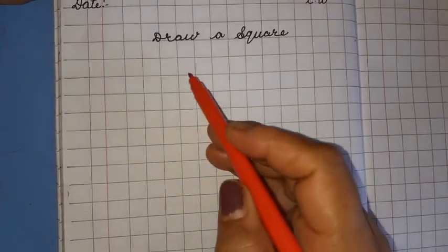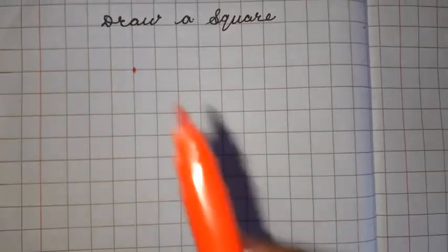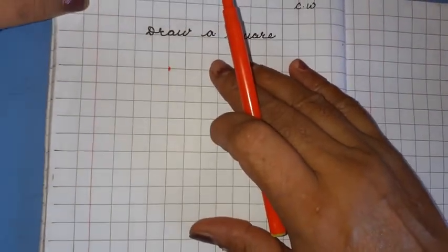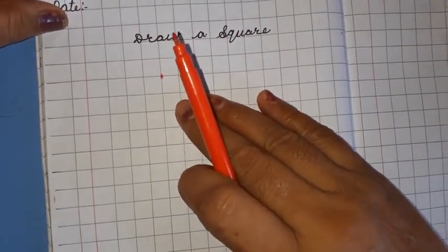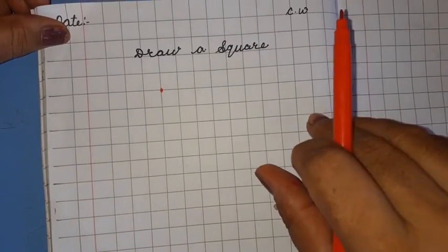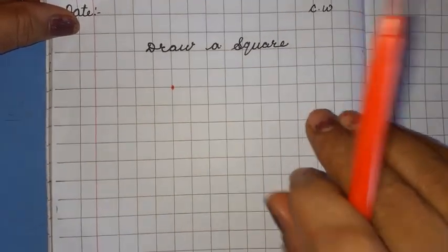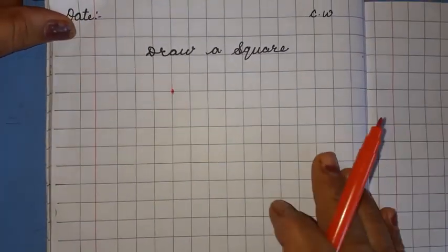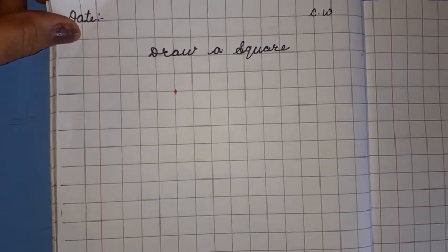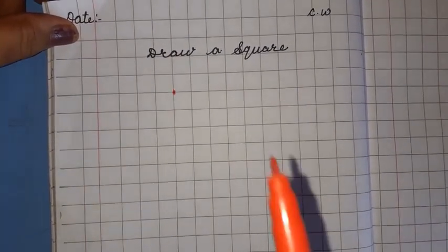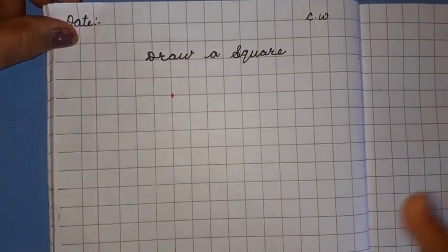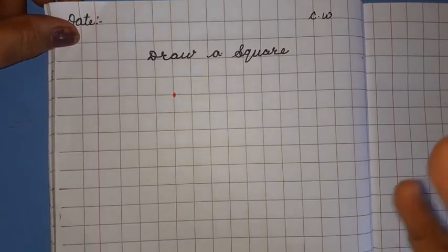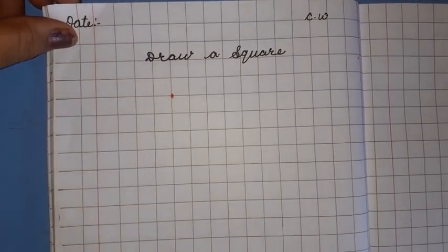This is your margin. Start from the fifth box — leave four boxes: one, two, three, and four — and start from here. You can draw the square with the help of a pencil and scale, but I am going to draw here with a pen. You have to draw with pencil and scale; if you want to use a scale you can, if not, no need.